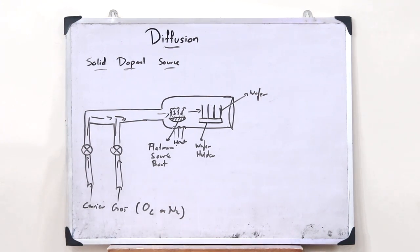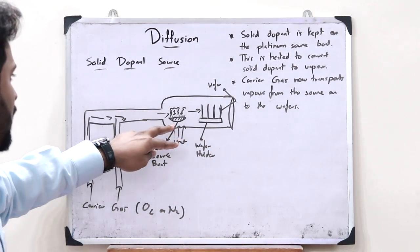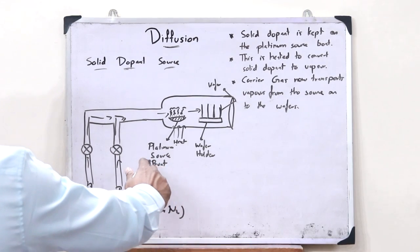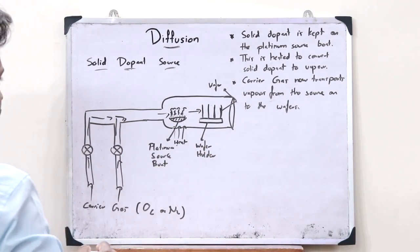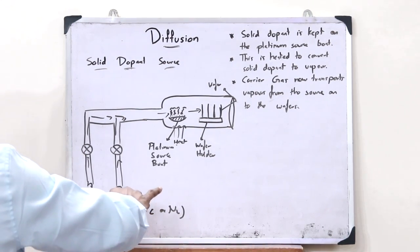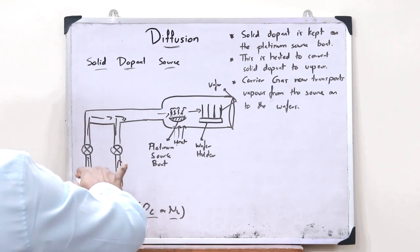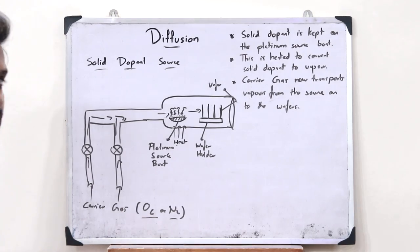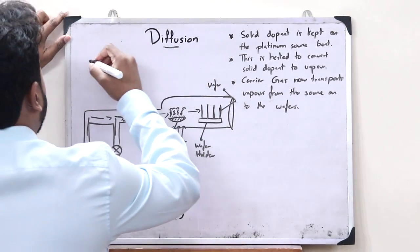As simple as that. The solid dopant is kept on this particular platinum source boat. This particular platinum source boat is heated to convert this particular solid dopant source into a vaporized form. A particular carrier gas — that is, oxygen O2 or N2 — is given, which now transports these vapors onto this particular wafer.